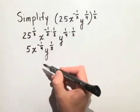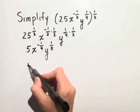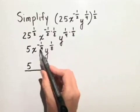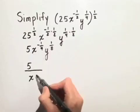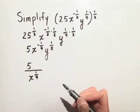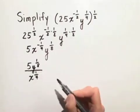Let's write this so that all of our exponents are positive. So, the 5 we'll keep in the numerator. We'll move x to the negative 1 fourth down to the denominator, and by our negative exponent rule, it becomes x to the positive 1 fourth. And y to the 1 eighth stays in the numerator.